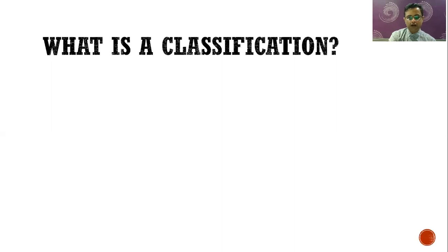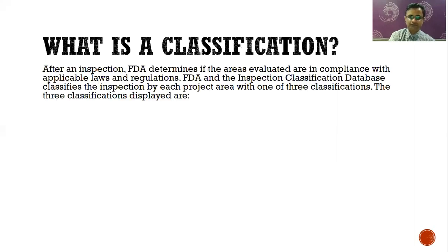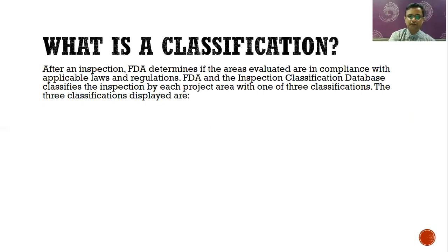After they complete the inspection, they will certify your site and they will give a classification. After an inspection, FDA determines if the areas evaluated are in compliance with the applicable laws and regulations. The FDA inspection classification database classifies the inspection by each project area with one of three classifications.